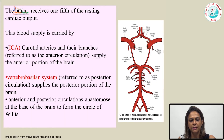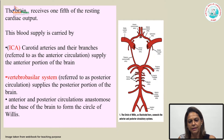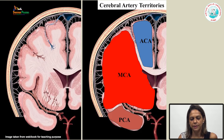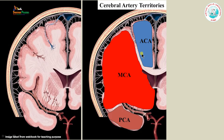Good morning. Today I will be discussing cerebrovascular diseases of the CNS. The main blood supply to the brain is carried through the internal carotid artery, which forms the anterior circulation, and the vertebrobasilar system, which forms the posterior circulation. This is a pictorial representation of the anterior, middle and posterior circulation to the brain.